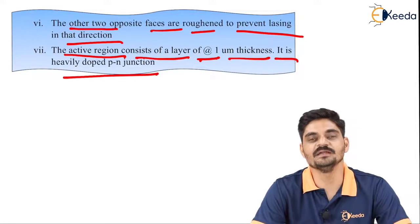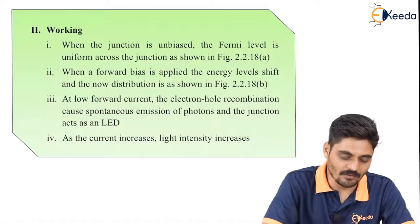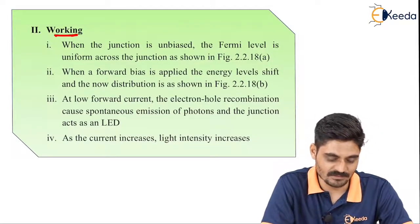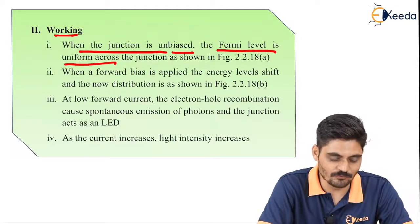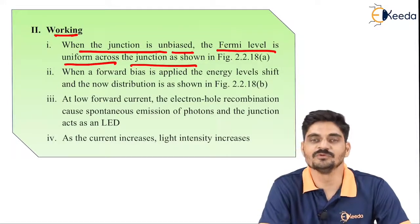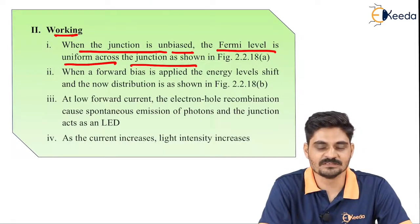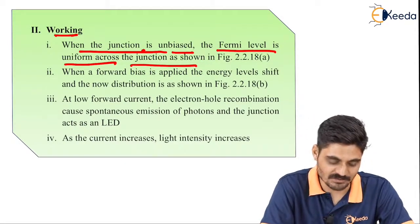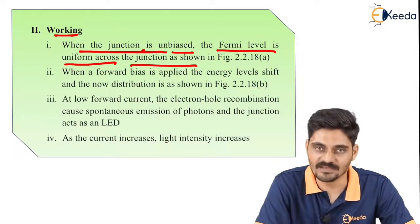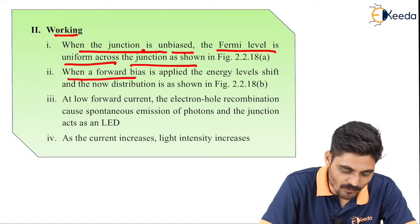The active region is a heavily doped p-n junction, which acts as the active medium. Regarding the working: when the junction is unbiased, the Fermi level is uniform across the junction — meaning the energy levels of the P-type and N-type are at equilibrium. To operate the semiconductor laser, forward biasing must be applied to the p-n junction.